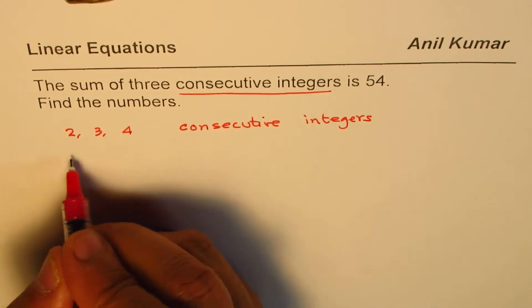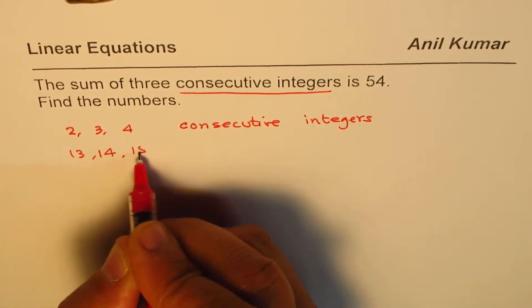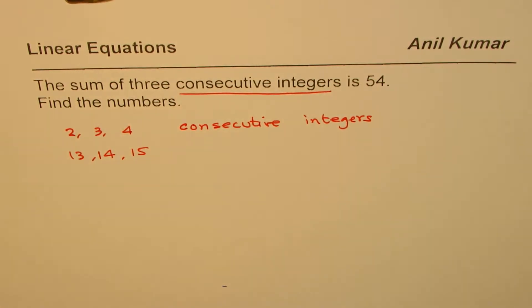Or we could write 13, 14, 15. These are three consecutive integers. So the numbers which come one after the other.